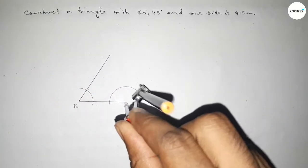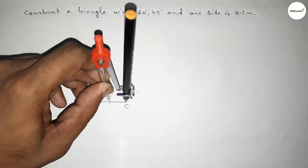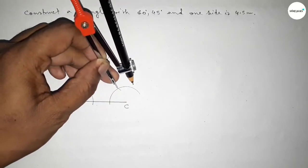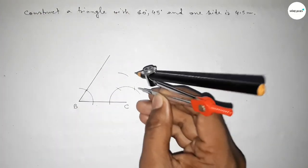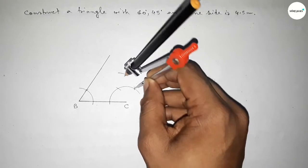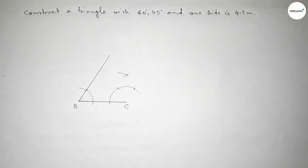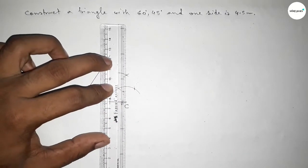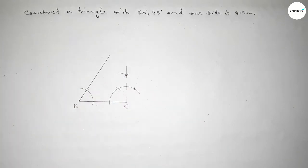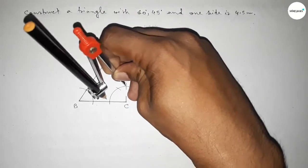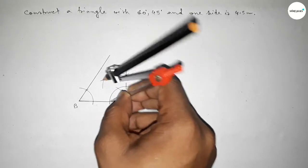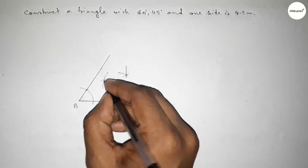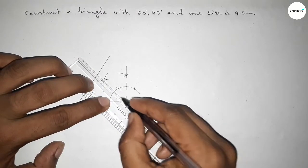Putting the compass at C and drawing an arc, then taking the same length to cut here. Putting the compass again to cut and drawing an arc with the same length to get a 90 degree angle. Then bisecting this angle: putting the compass and taking greater than half, drawing an arc, and with the same length cutting again so both curves intersect. Joining this line gives us a 45 degree angle.